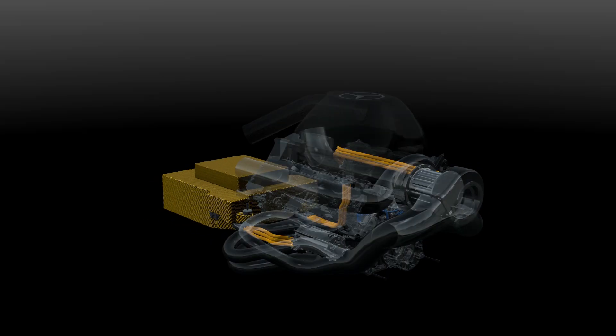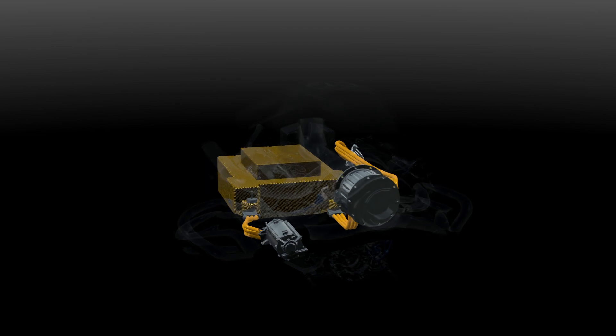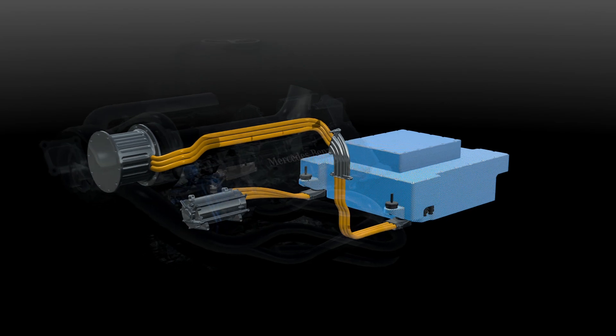The hybrid system is called the energy recovery system. It has two electrical devices called motor generator units and the battery called the energy store.